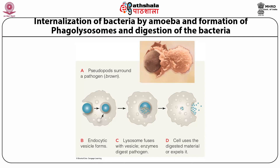Phagocytosis also plays an important role in the defense mechanism. Pseudopodia surround pathogens and after forming pseudopodium, cells undergo endocytic vesicle formation. These endocytic vesicles fuse with lysosomal vesicles containing enzymes which digest the pathogens. After digestion, cells use the digested material and expel waste throughout the body.